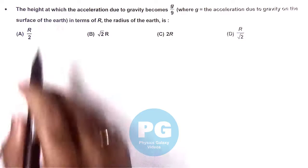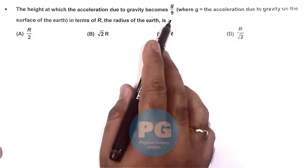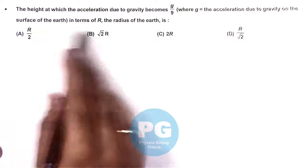In this question it is asking the height at which the acceleration due to gravity becomes g by 9, where g is the acceleration due to gravity on earth's surface in terms of r,